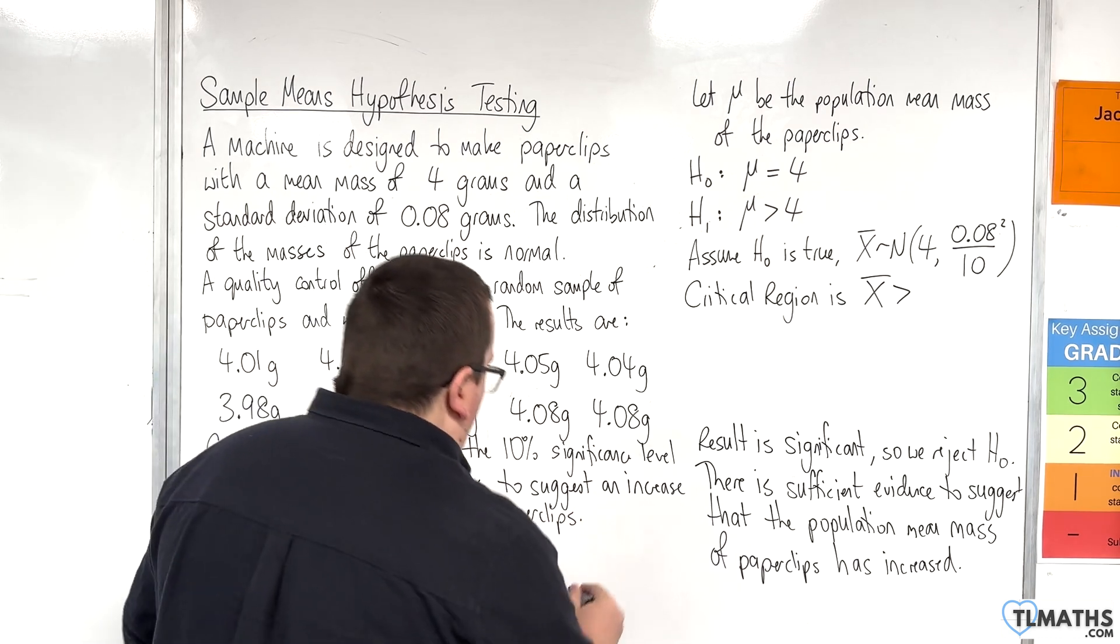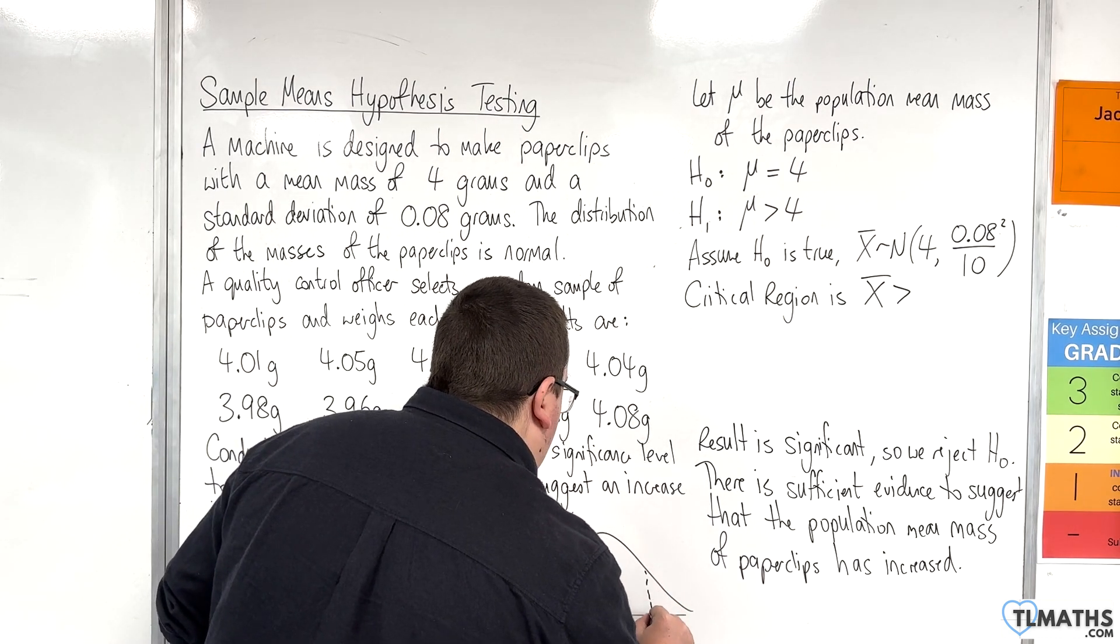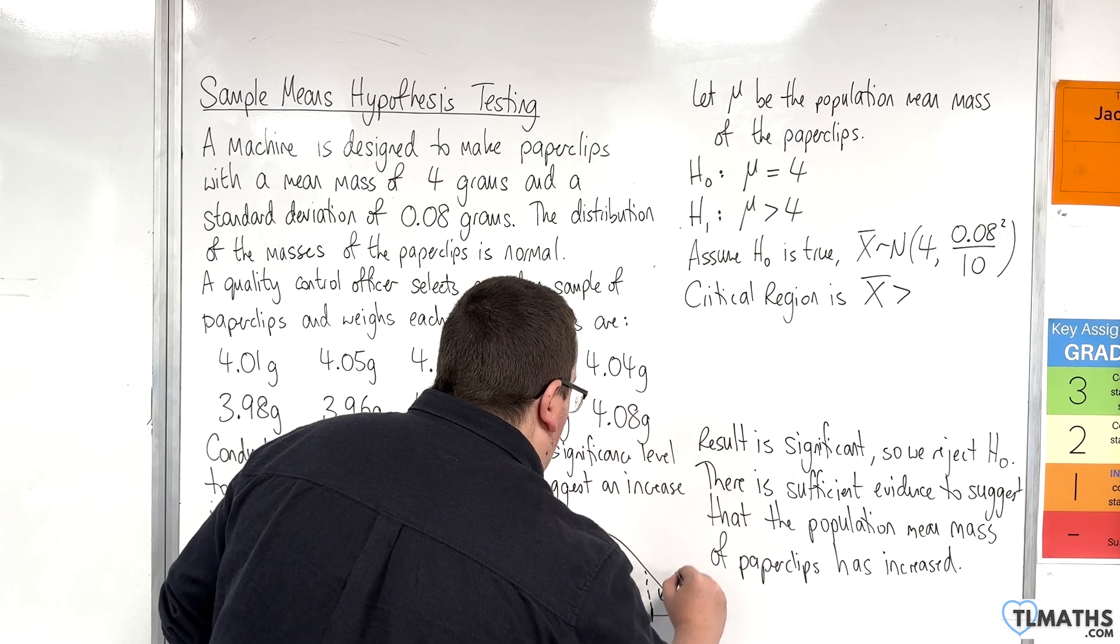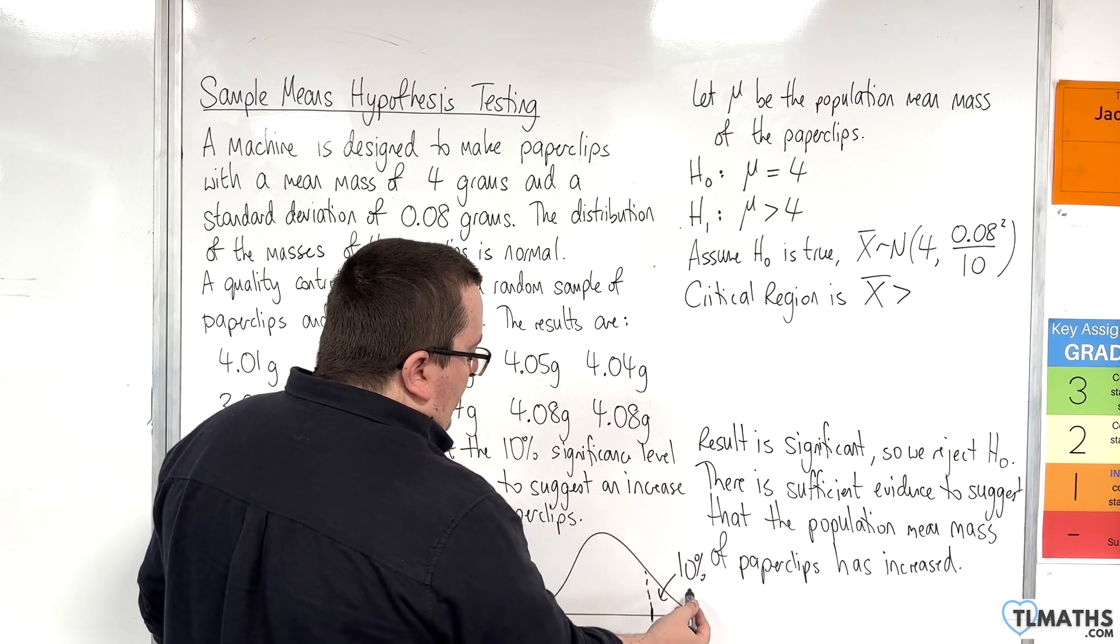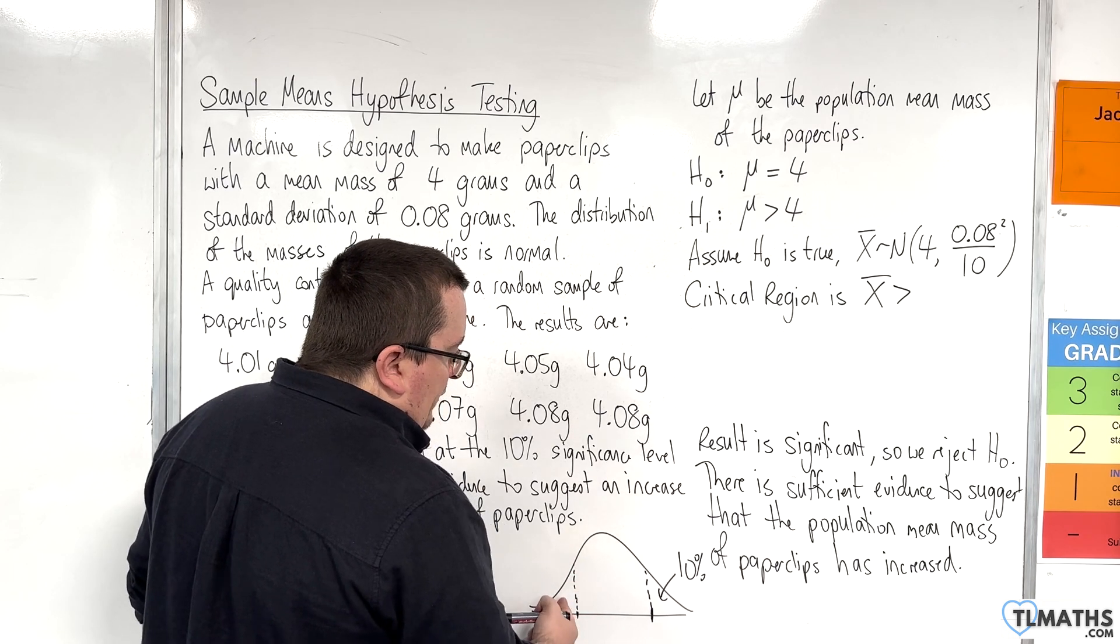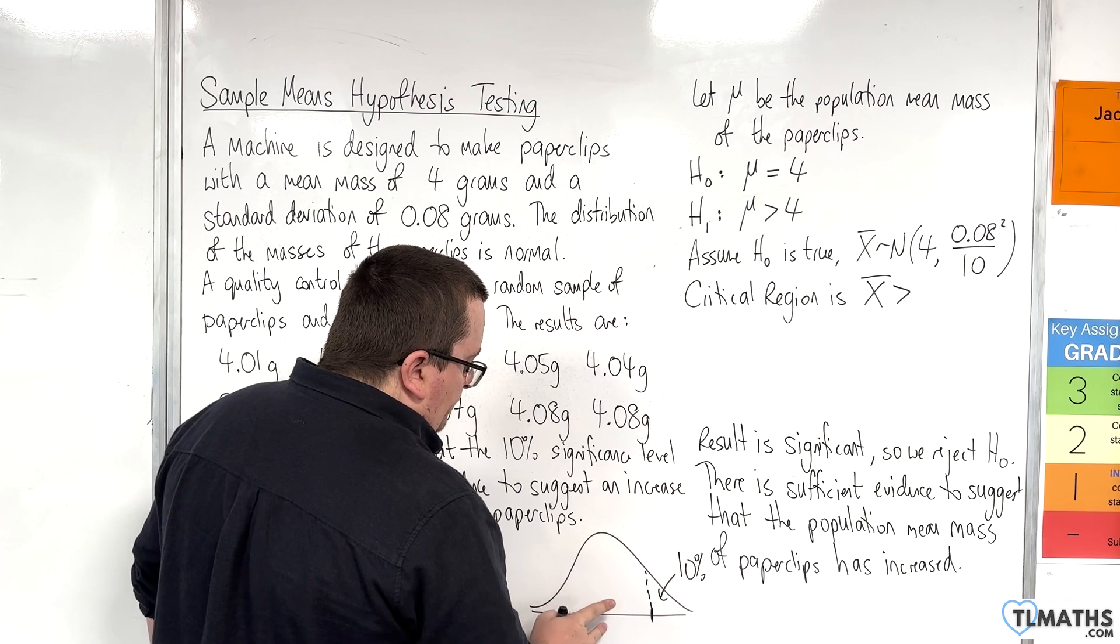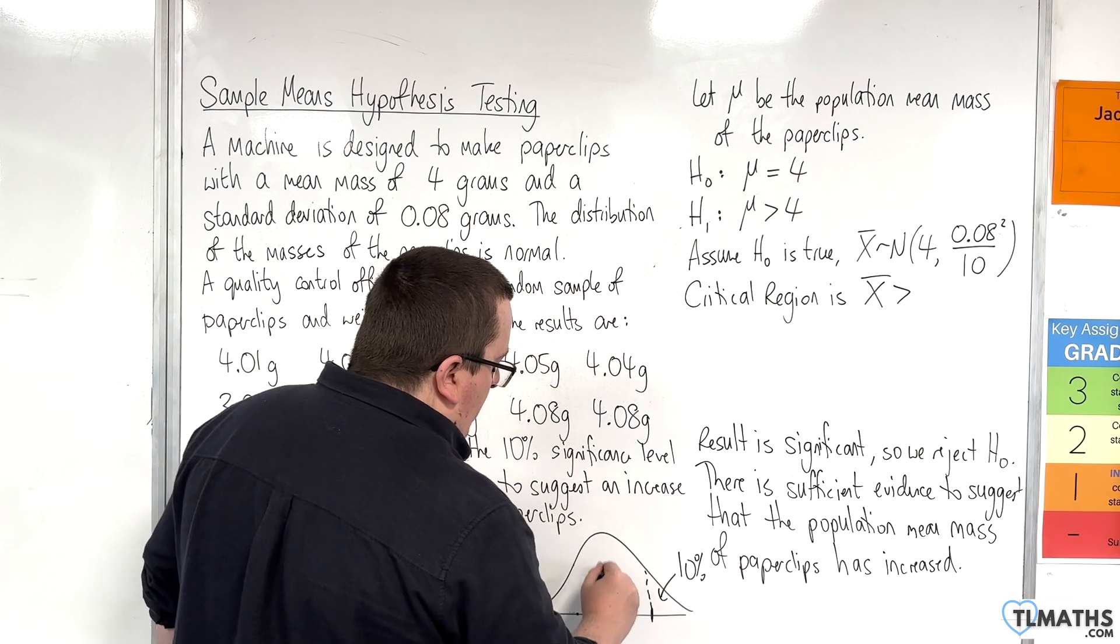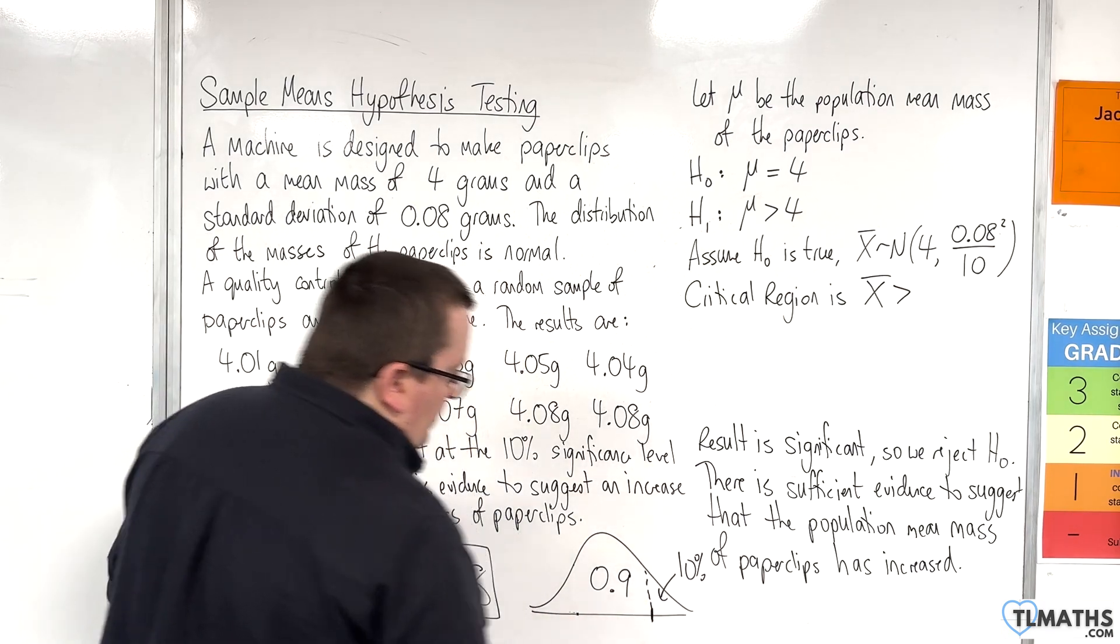So, visually, what's happening is I'm interested in this value here, where that's 10%. But the calculator, if I put 10% in, will actually work out this bit here, where that's 10%, because it only works to the left. So, what I need to do is type in 0.9 as the error, and that will give me that value there.